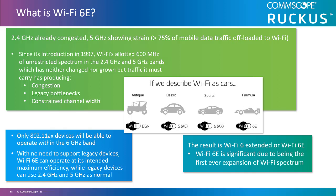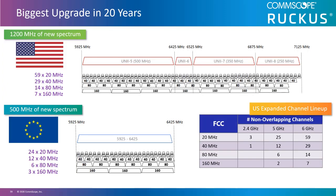Because of this new allocation, along with less interference from non-Wi-Fi devices, 80 or 160 MHz channels might now be possible. On April 23rd, 2020, the U.S. Federal Communications Commission (FCC) vote was unanimous to allocate 1,200 MHz of spectrum for the unlicensed use of the 6 GHz band.